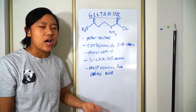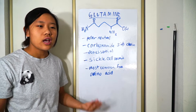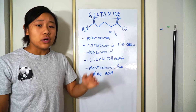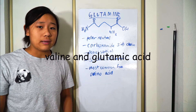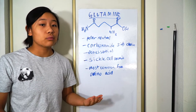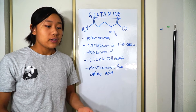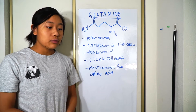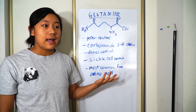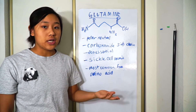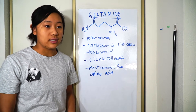Glutamine is actually involved in helping sickle cell anemia patients, which is very interesting. Don't get this confused with valine and glutamic acid — that's the original genetic basis of sickle cell anemia, where valine replaces glutamic acid in hemoglobin due to a point mutation in the gene, and that's what causes sickle cell anemia.